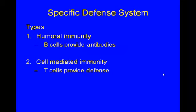We break specific immunity down into two types. Humoral — humor means bodily fluid — these are B cells, and B cells will provide antibodies for us because B cells are found in all your bodily fluids. The second type is cell-mediated immunity, which involves T cells, and they provide a defense a little differently.